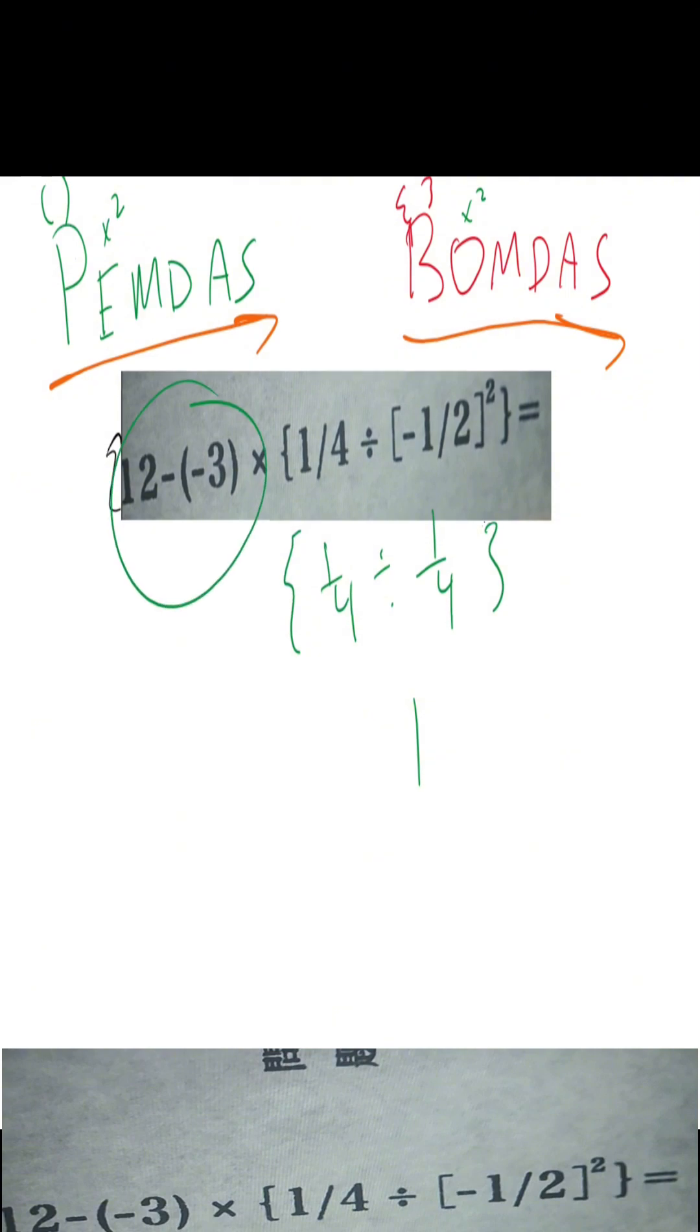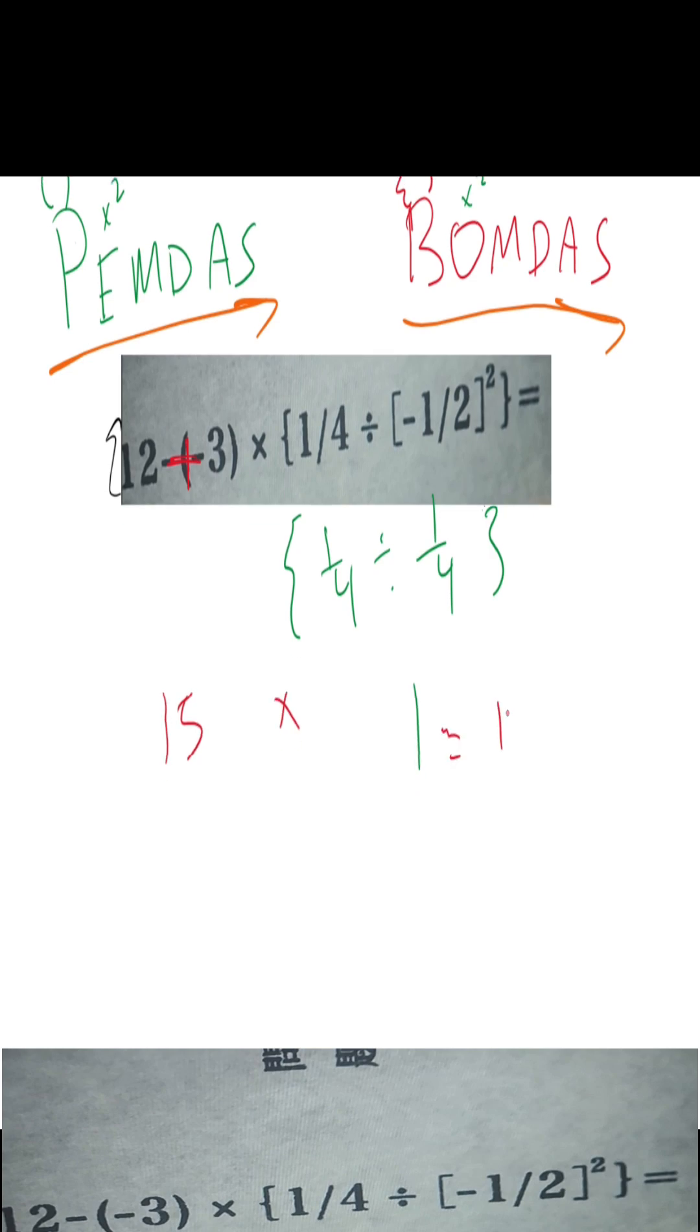Now we can finally work on this side. Here we have 12 minus a minus three. I was taught whenever you have a minus outside the parentheses and a minus right here, you just make a plus sign out of it. So that's literally just 12 plus three. So 12 plus three is going to be 15. So we literally just have 15 times one, which is going to be equal to 15. So we got 15.